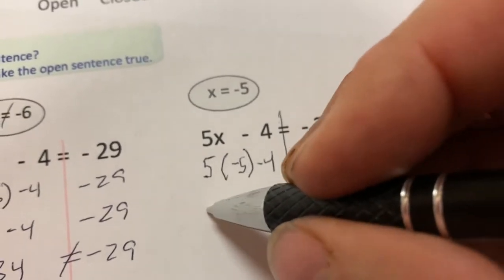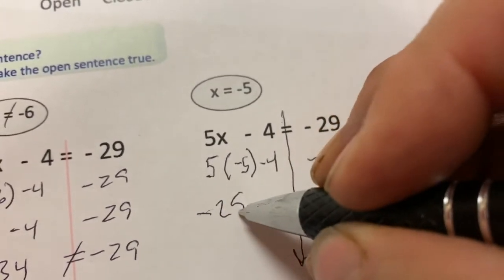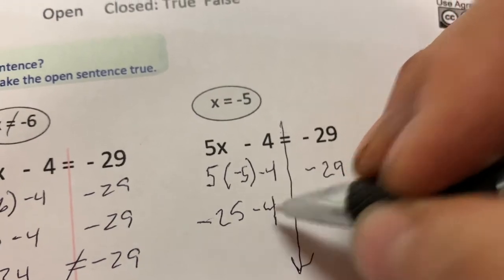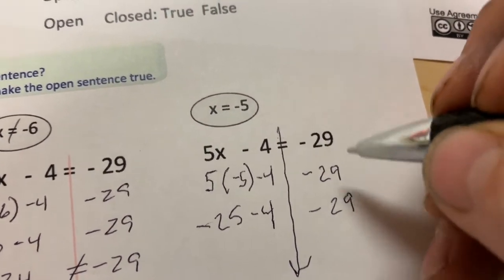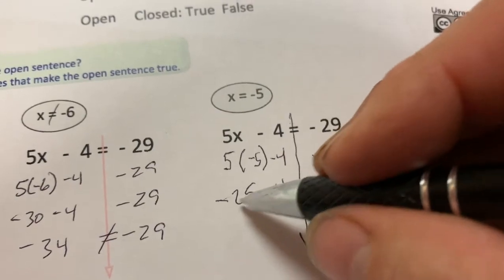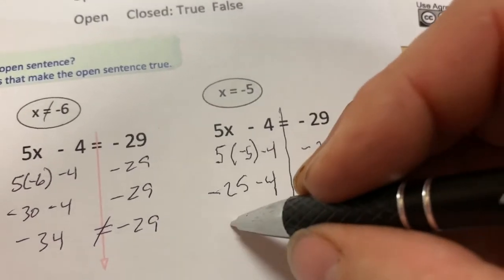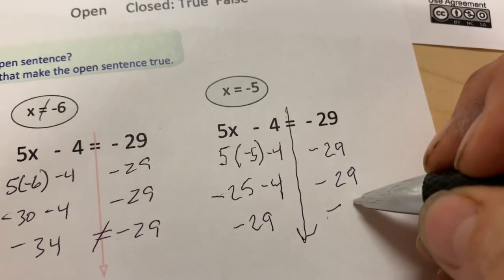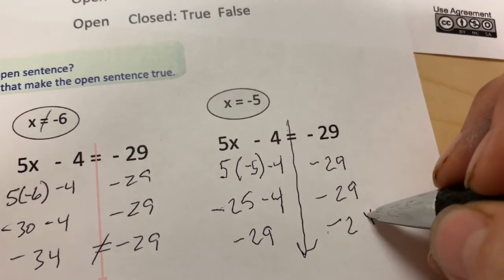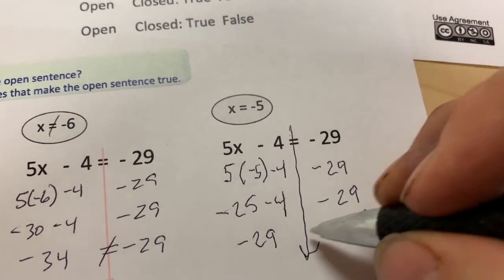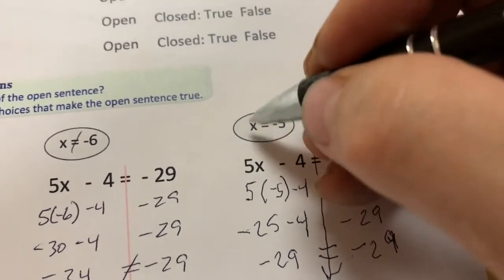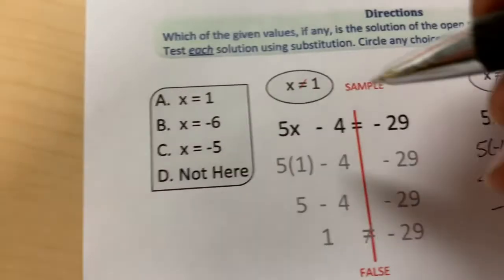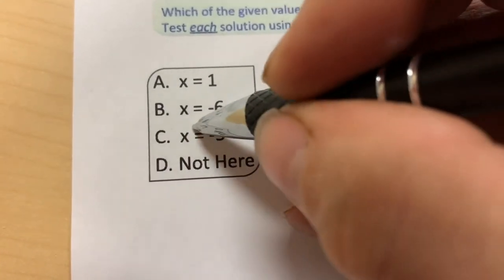5 times negative 5. That's negative 25. Minus 4 or negative 4. And negative 29. If we combine 25 cold things with 4 more cold things, 29 cold things. Is that the same as 29 cold things? It is. So, that's true. X equals negative 5. Right here, the answer is C.